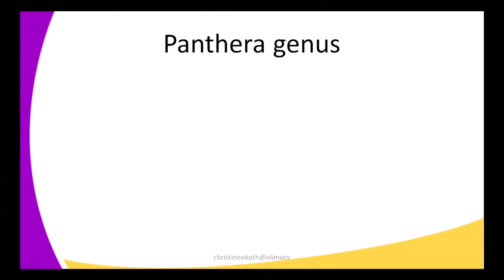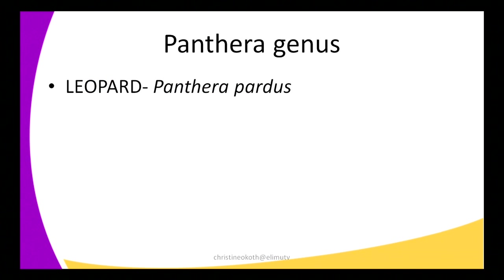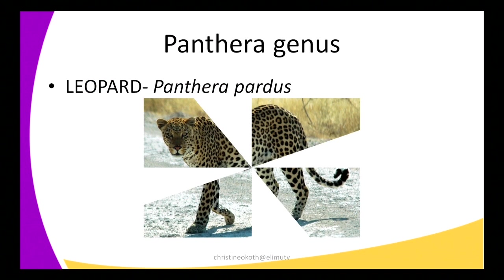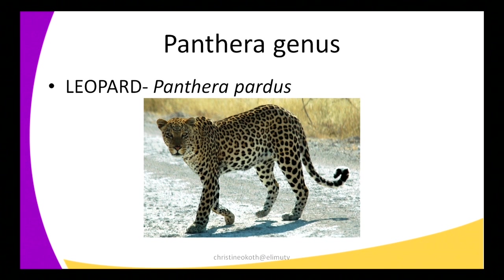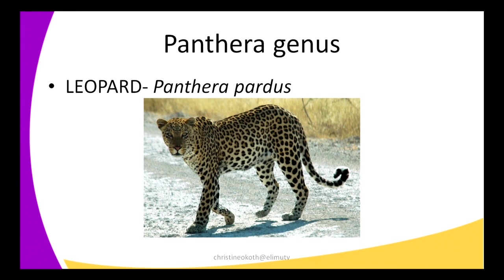The next member of the Panthera genus is the leopard, whose scientific name is Panthera pardus. Leopards are the smallest of the big cats. They have a long body, short legs, and powerful jaws. They look similar to jaguars but are a bit smaller and lighter. The patterns in their fur — called rosettes — are smaller and more closely packed. They are excellent tree climbers, run very fast, and hunt and eat different animals.